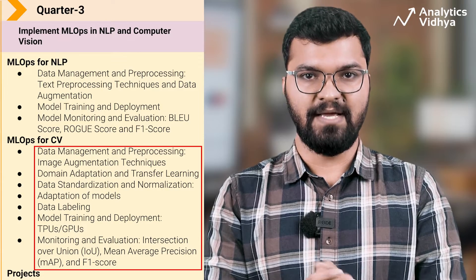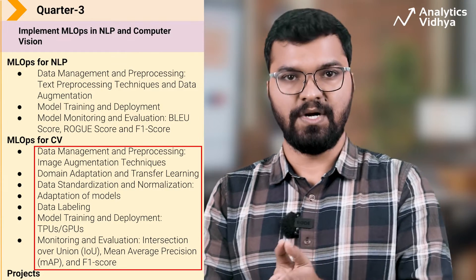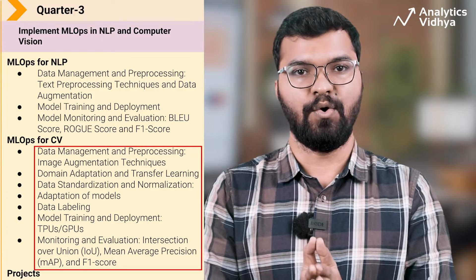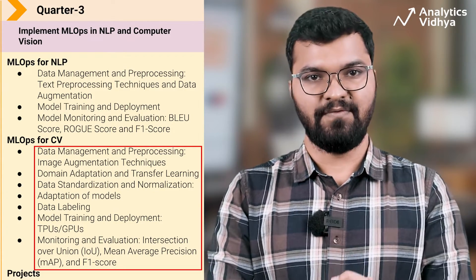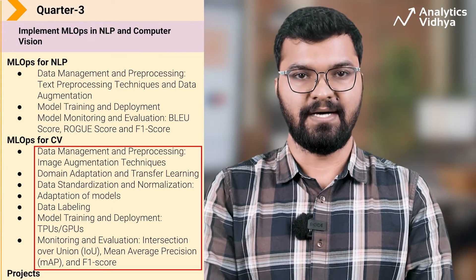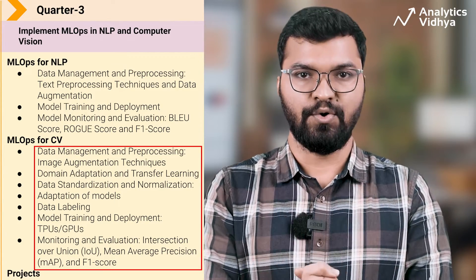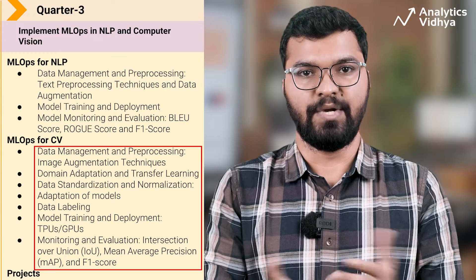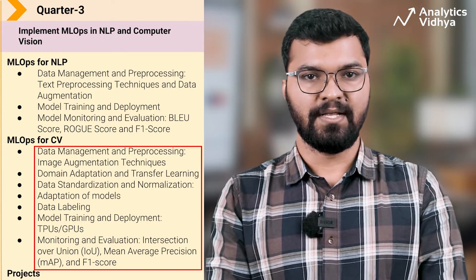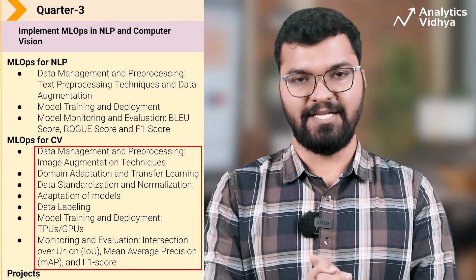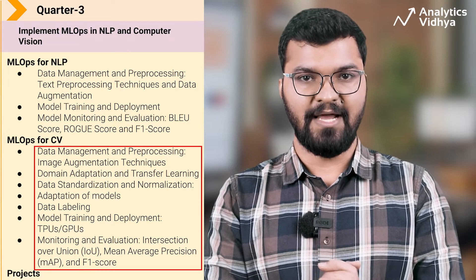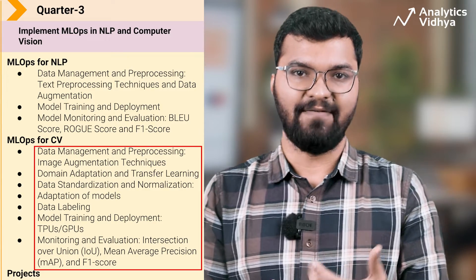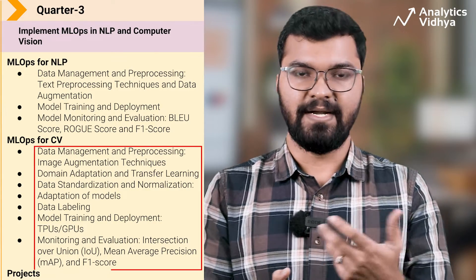In data labeling, learn techniques like bounding box annotation. For model training and deployment, understand the advantages of using GPUs and TPUs for efficient training of large computer vision models, and familiarize yourself with the costs involved. Optimize cost by right-sizing resources, utilizing spot instances, monitoring usage, and using techniques like model pruning and cost-aware scheduling. Leverage cloud cost management tools, and use task-specific metrics like Intersection over Union, mean Average Precision, and F1 score for evaluation.